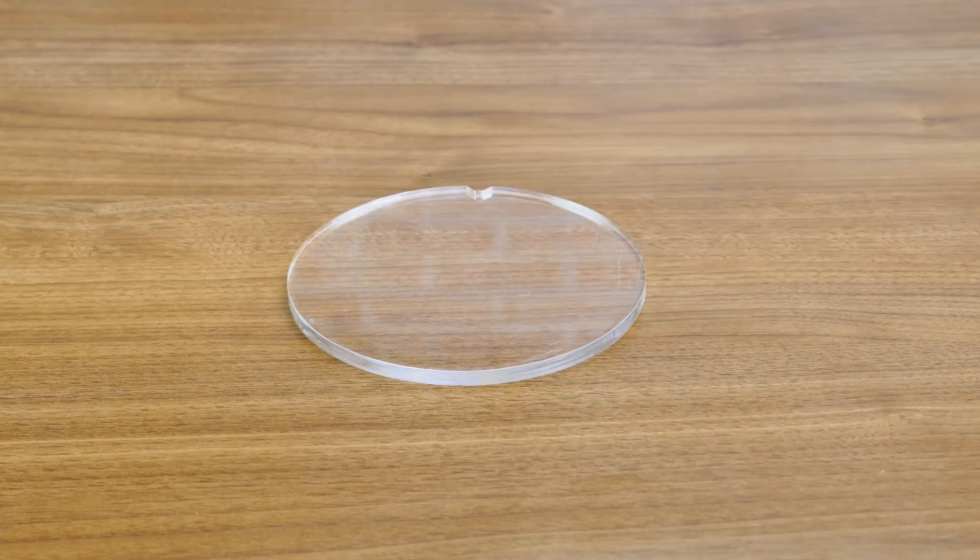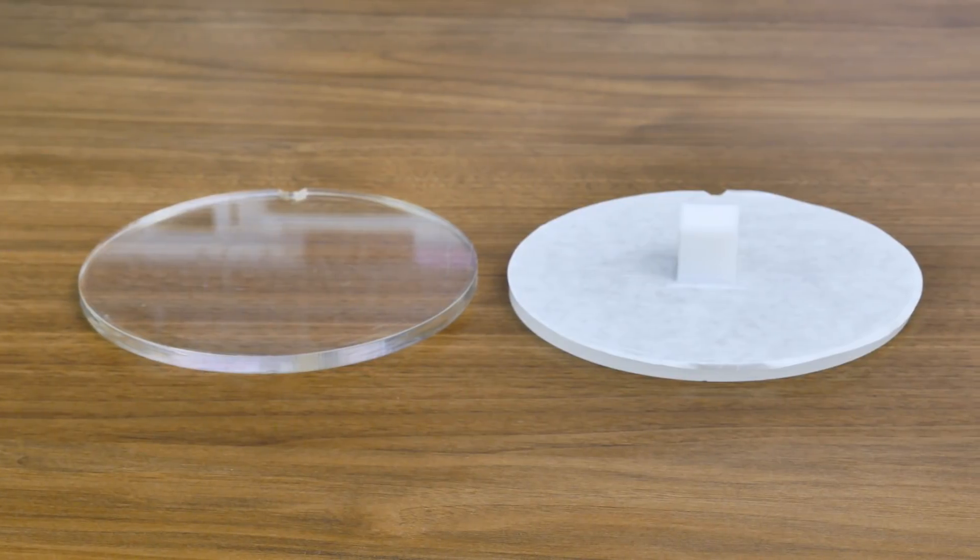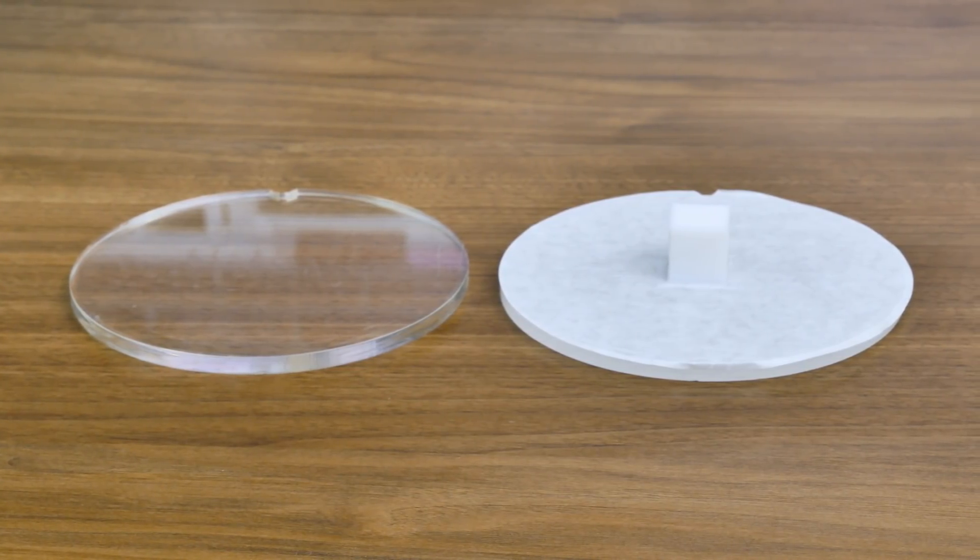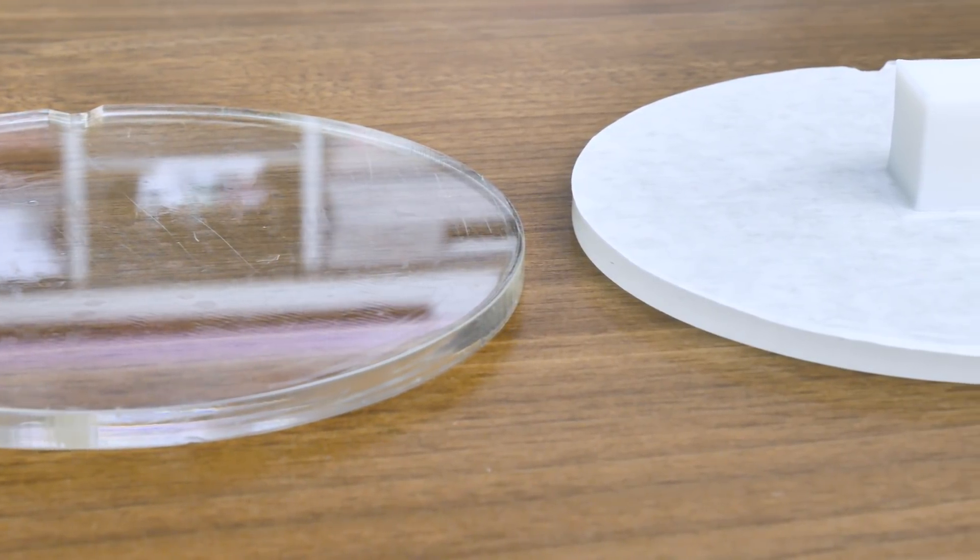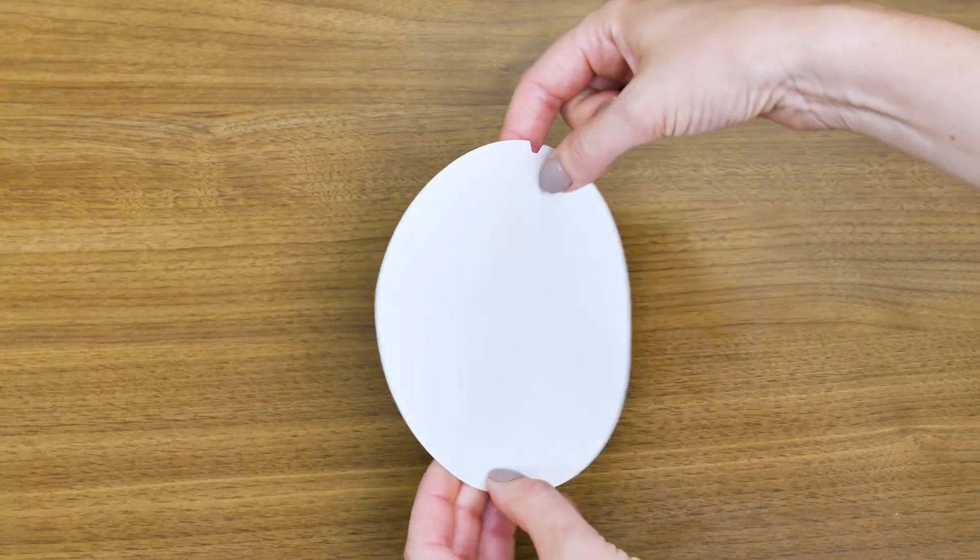The platform, also known as a build plate, is what your 3D object will be built on, so it's important that you prepare it. Using platform tape protects the platform and helps the filament to adhere properly.